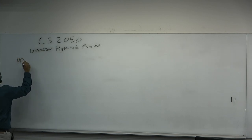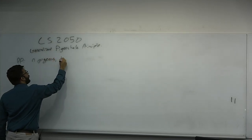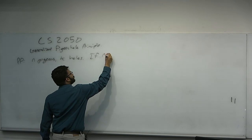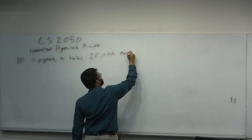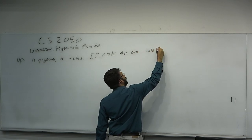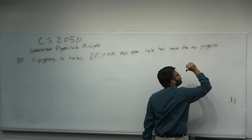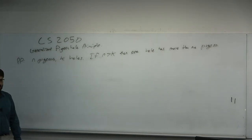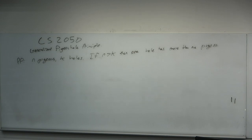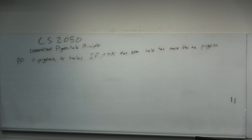What does the pigeonhole principle state? If you have n pigeons and k holes, and n is greater than k — strictly greater than k — then some hole has two or more pigeons. Every mathematical theorem is an item in your toolkit. The pigeonhole principle is one that wills into existence certain objects nonconstructively that have certain properties. It doesn't tell you where those objects are, but by a simple counting argument, they must exist.